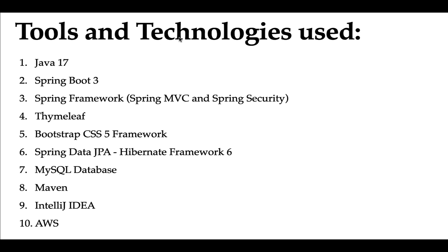Now let's look at the tools and technologies we are going to use. We'll use Java 17 and Spring Boot 3, the latest version, along with Spring Framework 6. We'll use the Spring MVC and Spring Security modules, and Thymeleaf to develop the view layer, plus Bootstrap CSS 5 to style our HTML pages.